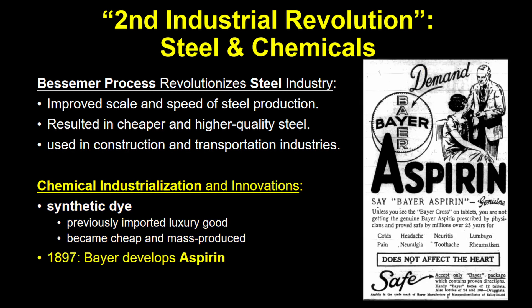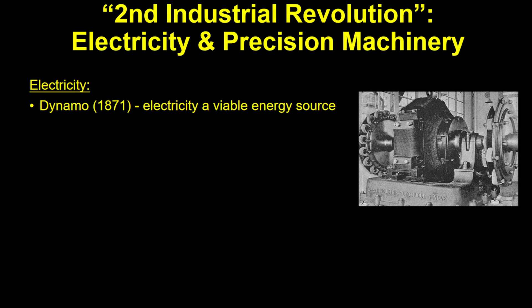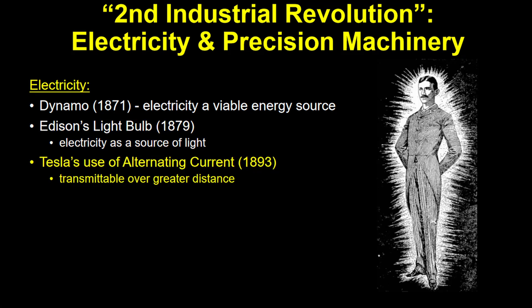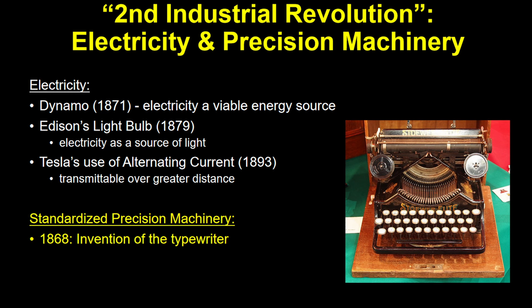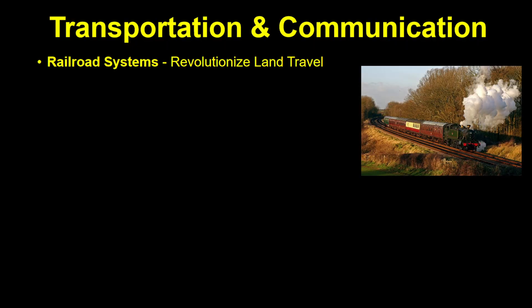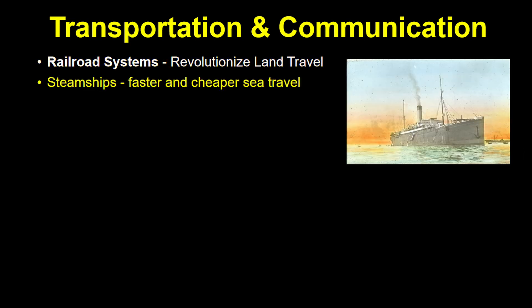Aspirin was developed by Bayer in 1897. Electricity was made available as another energy source with the invention of the dynamo in 1871. Soon after, the light bulb was invented by Thomas Edison, lighting up cities around the industrialized world. Nikola Tesla developed the use of alternating current, which made it possible to transmit electricity over greater distances. The development of standardized precision machinery was used in inventions like the typewriter and later used in the assembly line developed by Henry Ford. The fossil fuels revolution and the innovations of the second industrialization fueled even more innovations, especially in transportation and communication. Railroad systems, which made use of both steam-powered trains and steel production, revolutionized land-based travel. Steamships did the same thing on the sea.